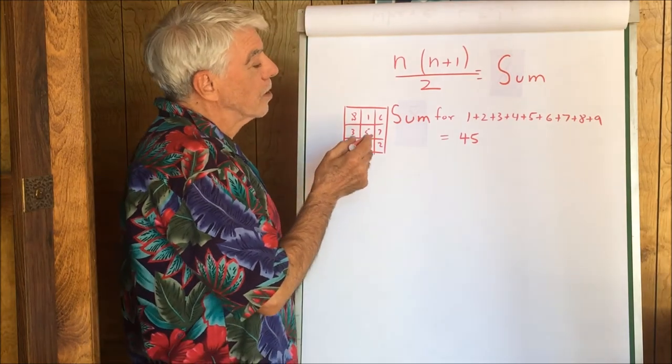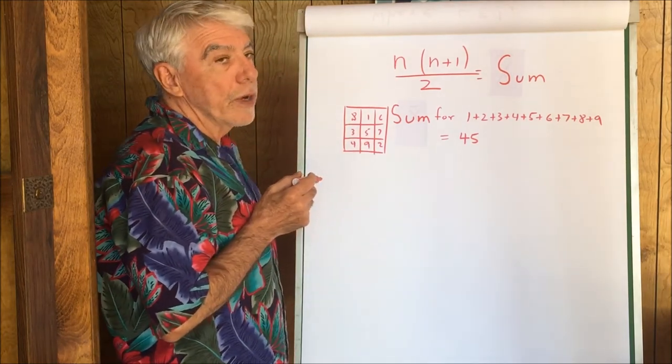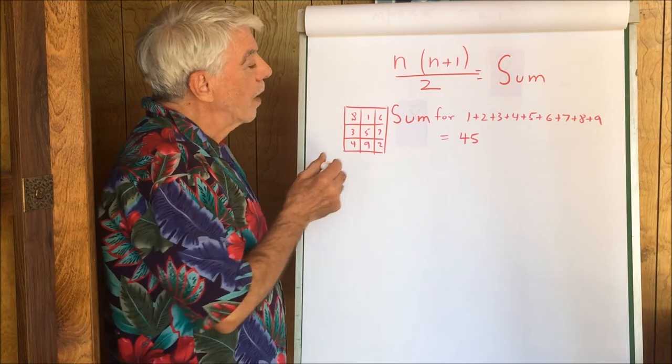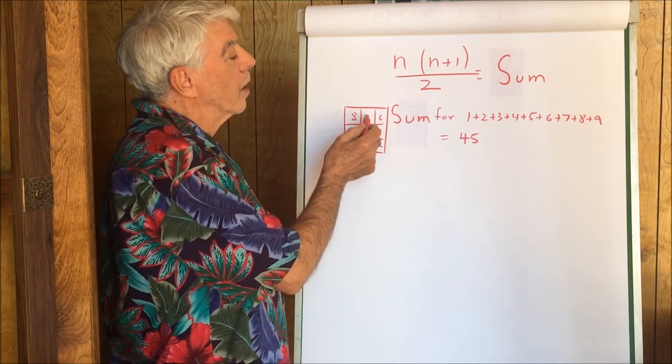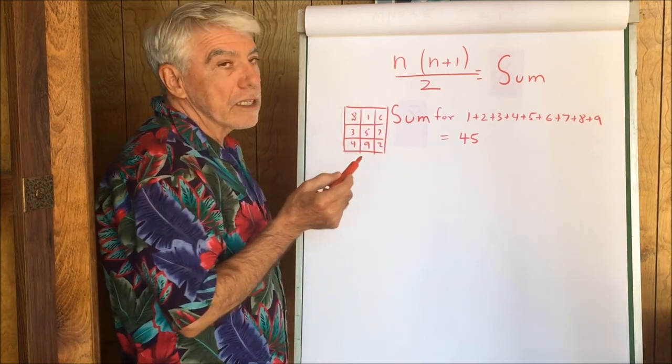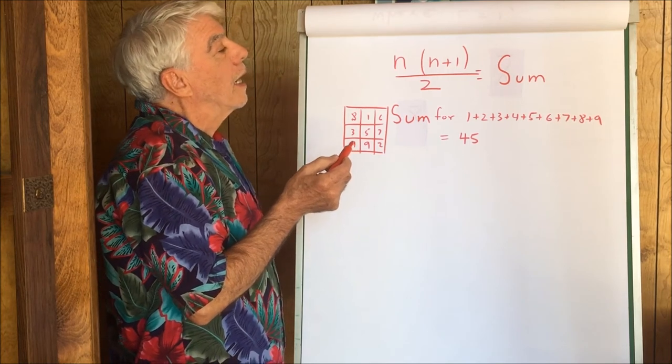So the sum for 1 plus 2 plus 3 all the way to 9 is 45. Now, let's simplify things by looking at a 3 by 3 matrix. And we see we have the numbers 1 and since it's 3 by 3, the last digit is going to be 9.